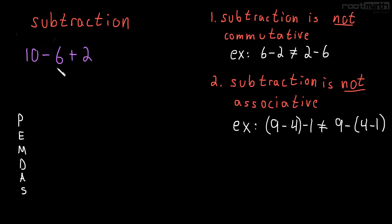And that looks like we're supposed to do addition first. Addition comes before subtraction. So this would be 10 minus 8, which would be 2. But that's wrong. That is the wrong answer.